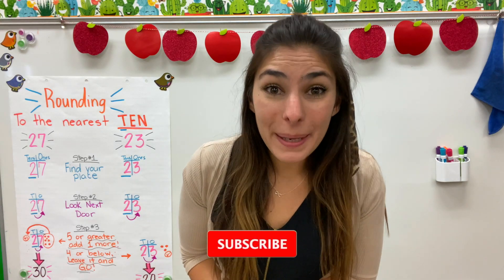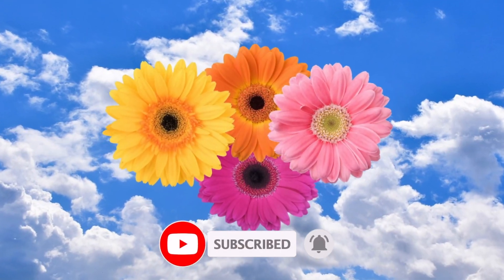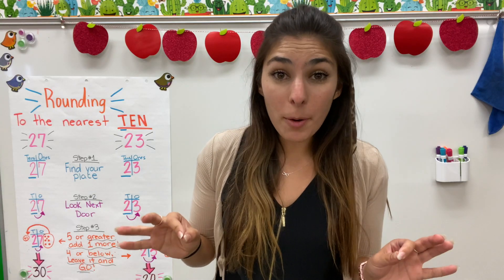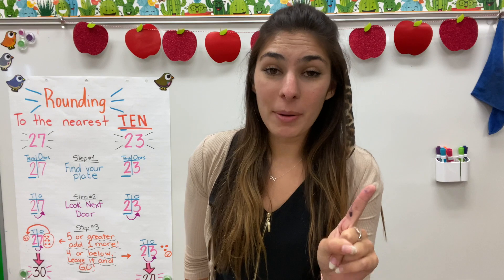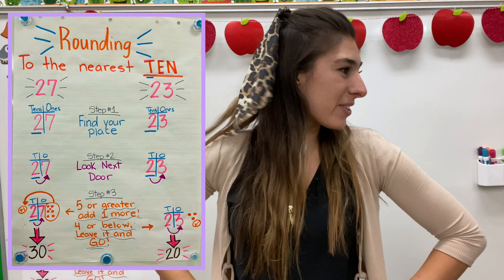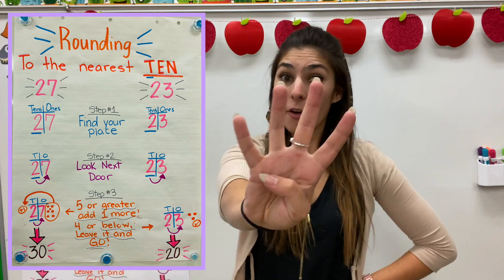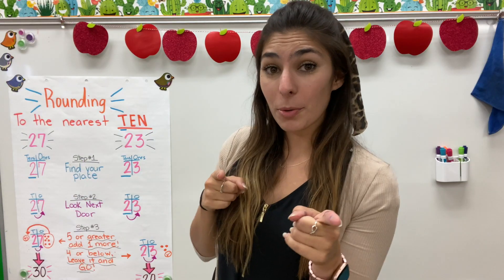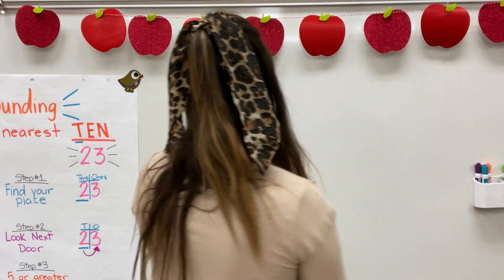Hey friends, welcome back to Balloon with Miss B! Today we are talking rounding. There are a couple ways that we can round to the nearest ten. First is by following a fun little rhyme: find your place, look next door, five or greater add one more, four below let it go. Let me show you one while following that rhyme.